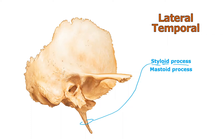The mastoid process is another bony protrusion that sticks out, reaching nowhere. We know the mastoid region is back there, and we can feel the mastoid process — that bony lump right behind your ear that everyone can palpate.